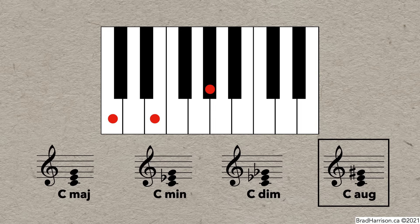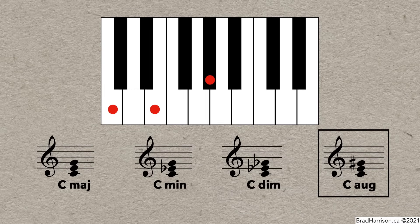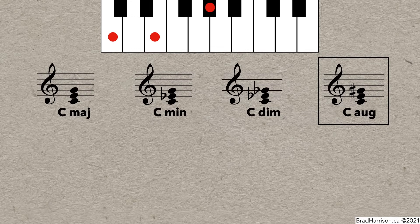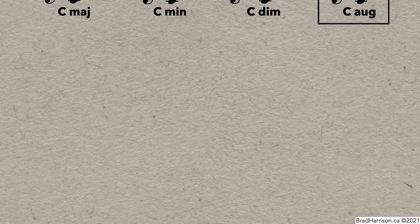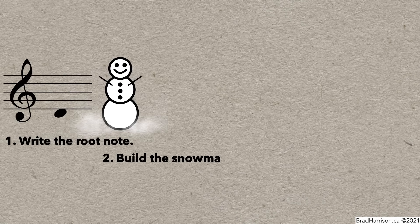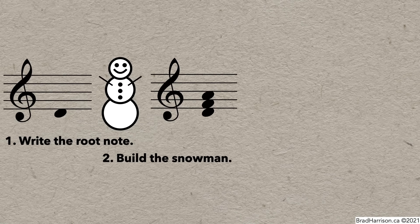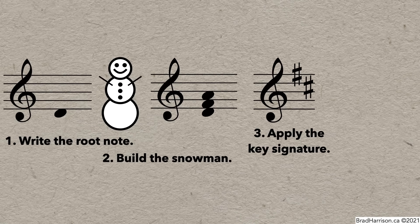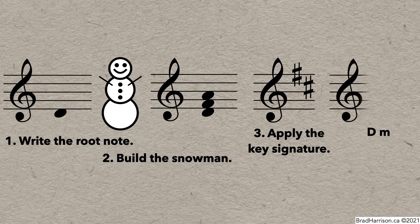To write a triad, it's common to start with a major version and then modify it as necessary. If you're writing a D triad of some kind, write the root note, build the snowman, and then apply the key signature. In D major, F and C are sharp. There's no C in this triad, but there is an F, so we add the sharp there. And there we have the D major triad.